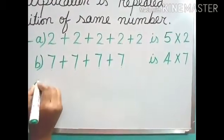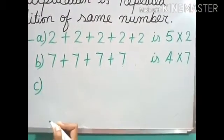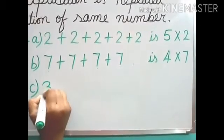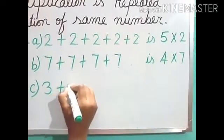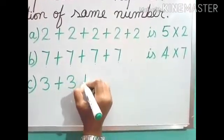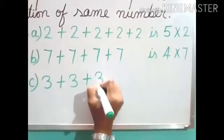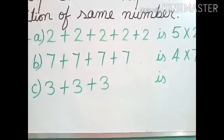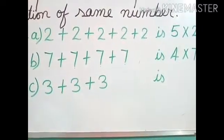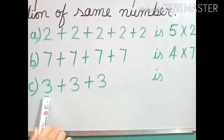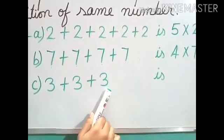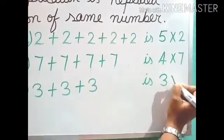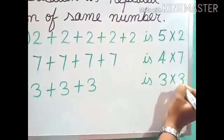Now the next one — number C: 3 plus 3 plus 3 plus 3. So 3 is written how many times? 1, 2, 3. So we can write 3 multiplied by 3.